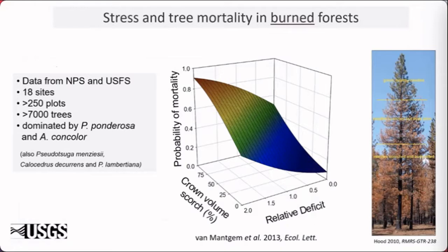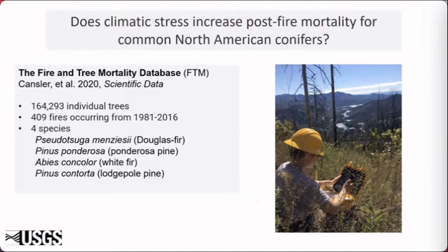We modeled this relationship directly, looking at how climatic stress affects post-fire tree mortality, in an earlier study using data from the National Park Service and U.S. Forest Service from 18 sites, more than 250 plots, and 7,000 trees in stands dominated by ponderosa pine and white fir. We found that the amount of crown volume scorched affects post-fire tree mortality probability, but that relationship was affected by what we called 'relative deficit' — the five-year pre-fire climatic water deficit relative to a 30-year average. Given the same amount of crown volume scorched, trees in stressful conditions were more likely to die post-fire. We were interested to see if this pattern held up with a much larger sample, so we turned to the fire and tree mortality database.